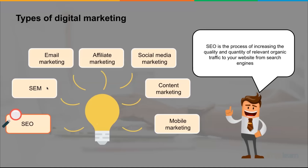SEO is about increasing the quality and quantity of relevant organic traffic on search engines, including Google. Google has a large market share in the US, so you want your pages to be found and clicked on organically. If somebody types in a keyword, you want that relevant page to show up first on Google. Millions of people search on a daily basis, so if you're ranking for those relevant keywords, you can get substantial traffic. For example, typing in 'online shopping' returns Amazon as the second organic result — no surprise there.